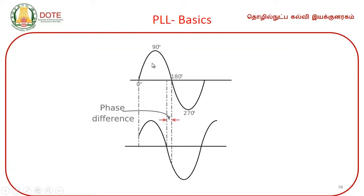Now we have two sinusoidal waveforms. How to check whether they are in the same phase or different phase? Take one particular point and draw a vertical line. If it meets the other waveform at the same point, then they are in phase. When it meets at a different point, the signal is out of phase with respect to the first signal. A slight phase angular difference can be seen.